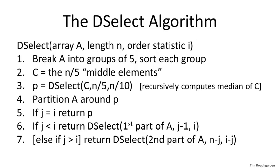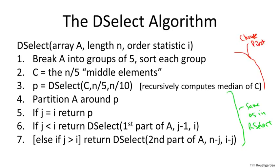Then we proceed exactly like we did in the randomized case: partition A around the pivot, get a first part and a second part, and recurse on the left side or the right side as appropriate, depending on whether the pivot is less than or bigger than the element we're looking for. The claim is, believe it or not, that this algorithm runs in linear time.